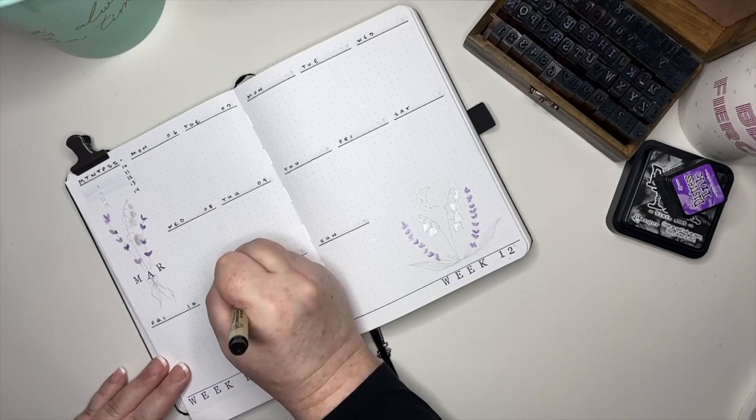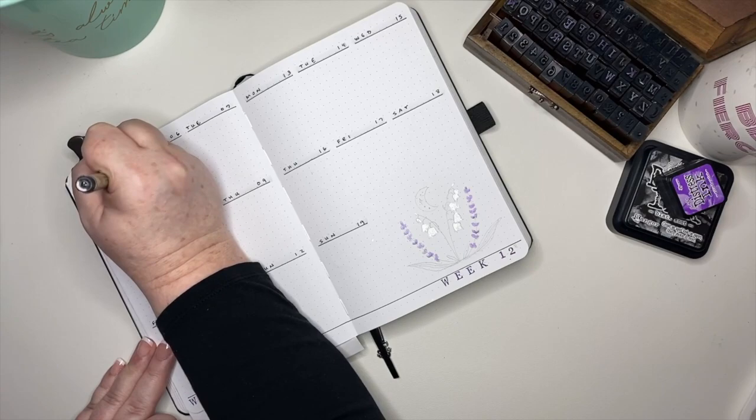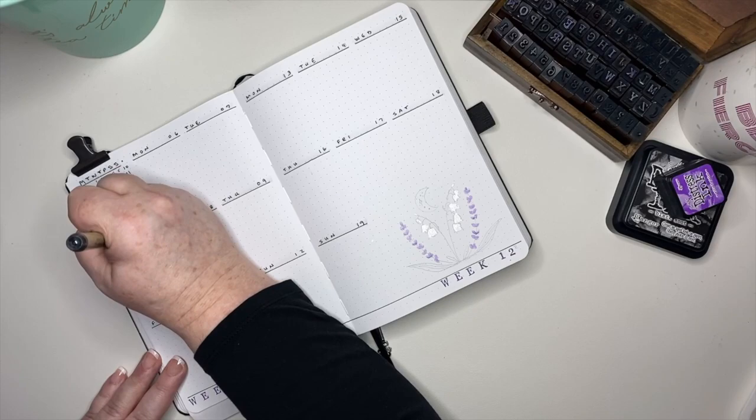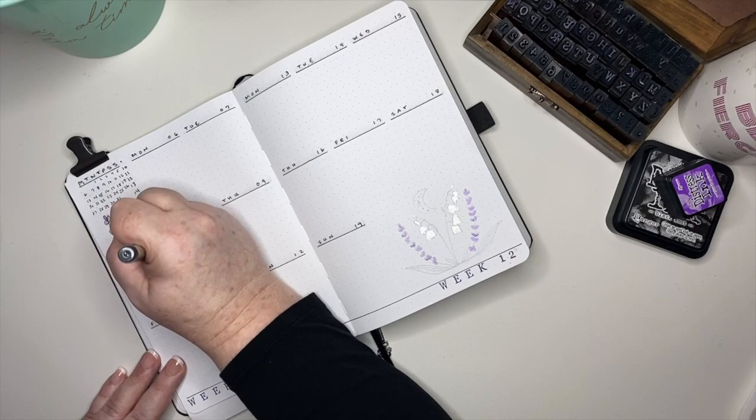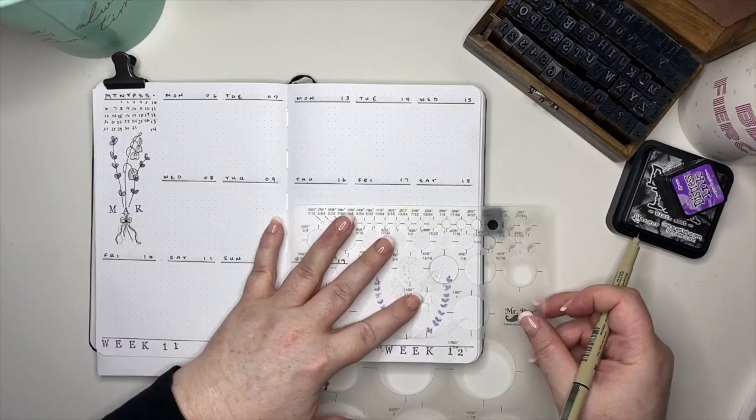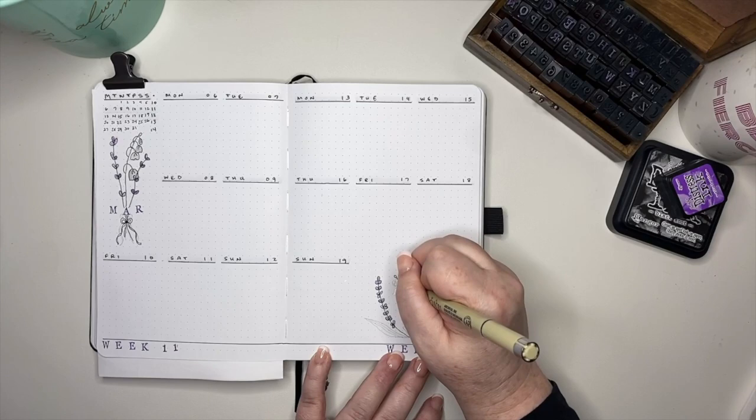This is a super simple way to get two weeks onto a single spread. If you are using an Archer and Olive or a notebook therapy journal, the spacing works out the same where you can have up to nine boxes that are eight dot grid spaces across and 12 down. I don't need nine for a week, so seven of those are for the days of the week, and then I have a mini calendar and some artwork. I squished the boxes from 12 deep to 11 deep, and that gives me a little bit of room at the bottom for the header as well for the week number.